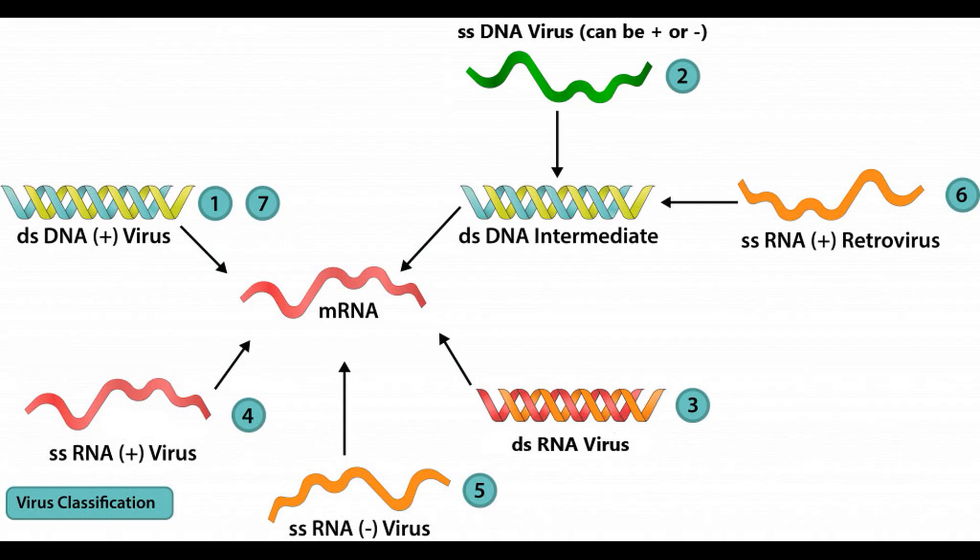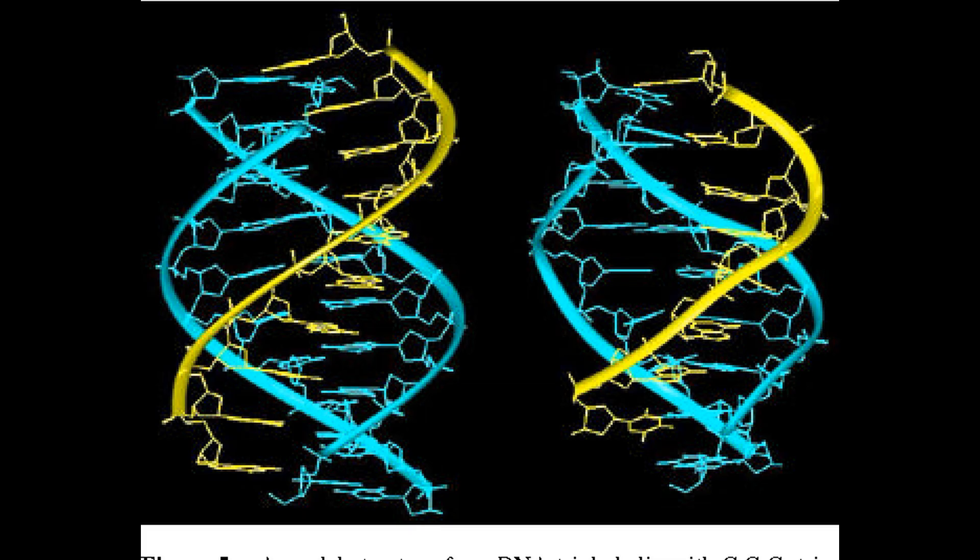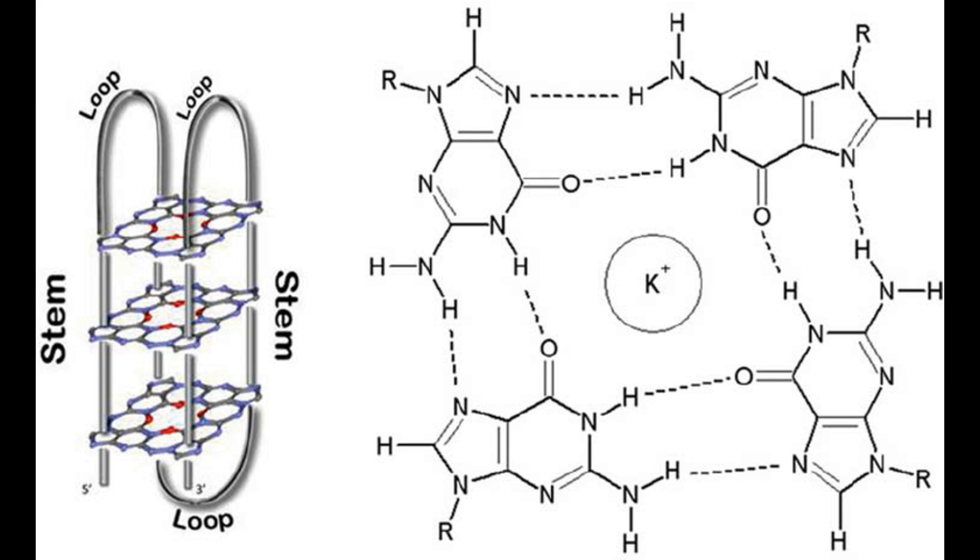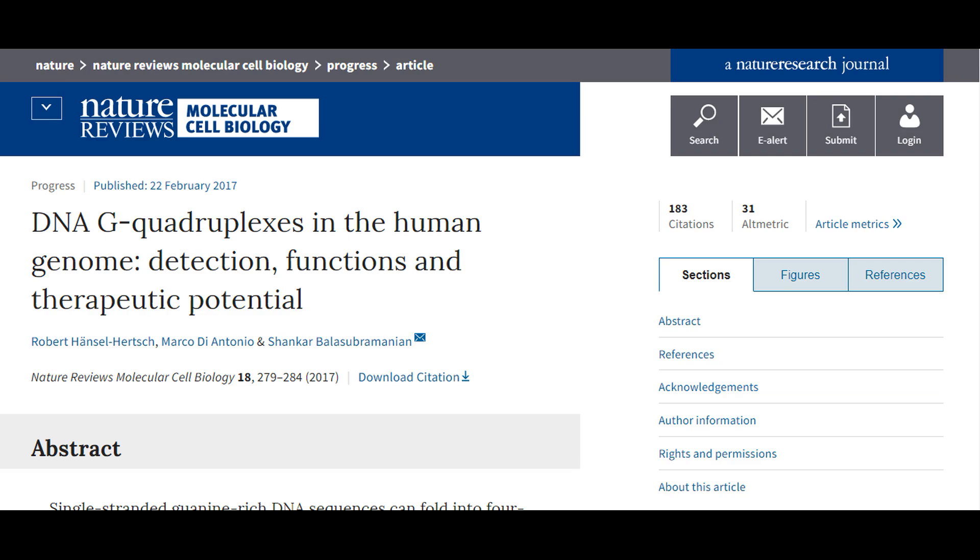So while DNA is usually double-stranded, RNA is usually single-stranded. Viruses can contain either DNA or RNA, both of which can be either double or single-stranded. Triple-stranded DNA and four-stranded G-quadruplex or G4 DNA exist too, but not much is known about these.